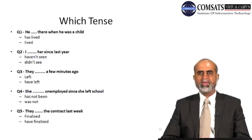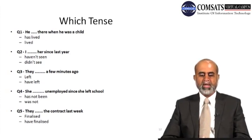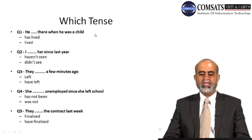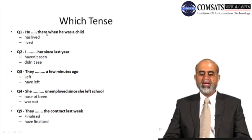Let's have a short exercise to find out which tense is correct. Question one: 'He [has lived / lived] there when he was a child.' The correct answer is 'he lived there when he was a child' — because 'when he was a child' is a specific, finished time word. This time is over; he is no longer a child, probably grown up. So we use simple past 'lived,' not present perfect 'has lived.'